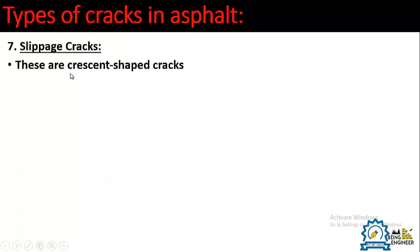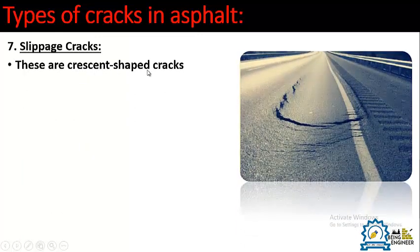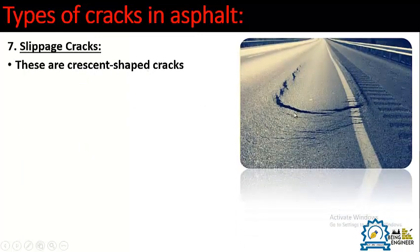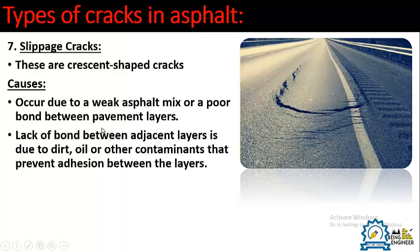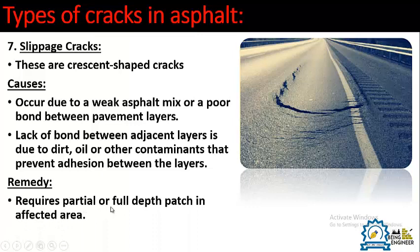Number seven is slippage cracking. These are crescent-shaped or curved cracks, as visible in the picture. They occur due to weak asphalt mixes or poor bond between the pavement layers. The lack of bond between adjacent layers is caused by dirt, oil, or other contaminants preventing adhesion. The remedy requires a partial or full depth patch in the affected area.